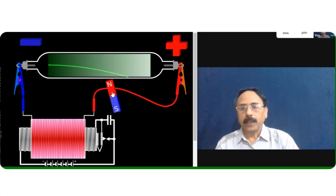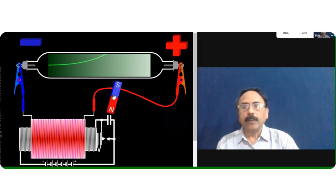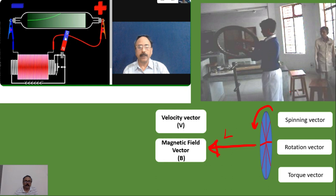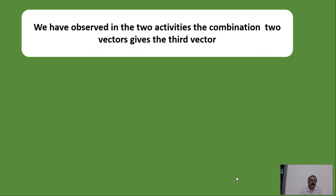When north pole faces the tube, bending is downward. When we change to the south pole, bending is in the upward direction. So the velocity vector of the charged particle, the magnetic field vector, and the force experienced by the charged particle are the three vectors involved.